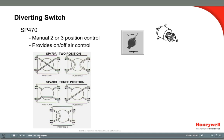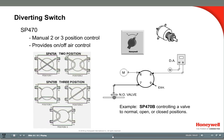The SB470 is a 2 or 3 position switch that can be used for on-off air control or diverting of pneumatic signals. With a 3-position switch in position 1, port 7 connects to port 9. In position 2, port 7 connects to port 8, with the other two ports blocked. In position 3, port 7 connects to port 6. In this example, a 3-position switch is connected to a normally open valve and a direct-acting thermostat. In position 1, port 7 connects to port 9 and the actuator exhausts so the normally open valve goes to full open. In position 2, port 7 connects to port 8 and the valve is under thermostat control. In position 3, port 7 connects to port 6 and main air is applied to the valve holding it closed.